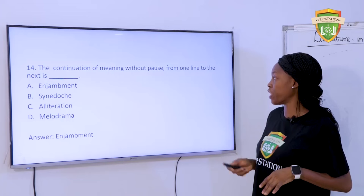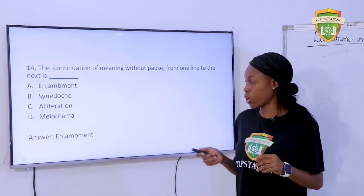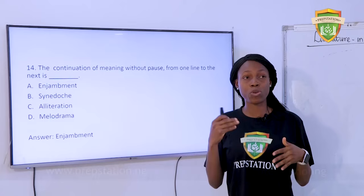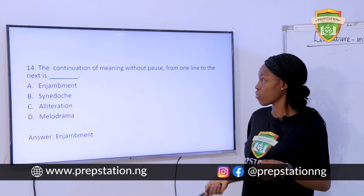Question 14: The continuation of meaning without pause from one line to the next is — A. Enjambment. B. Synergy. C. Admiration. D. Melodrama. The answer is enjambment. Sometimes when you look at a poem, there are no punctuations to end lines and it just goes from the beginning through to the end without a pause. In that case, it's an enjambment.